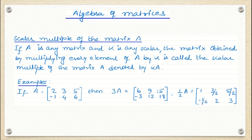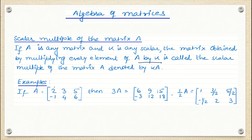Here is the scalar multiple of the matrix. If A is any matrix and K is any scalar, the matrix obtained by multiplying every element of A by K is called the scalar multiple of the matrix. Here is an example: the order of this matrix is two rows and three columns, so we write it as a two cross three matrix.